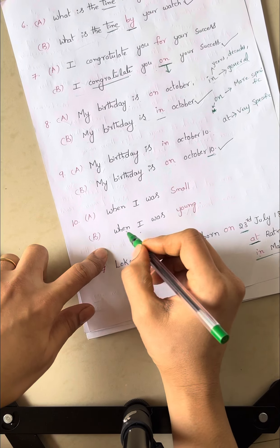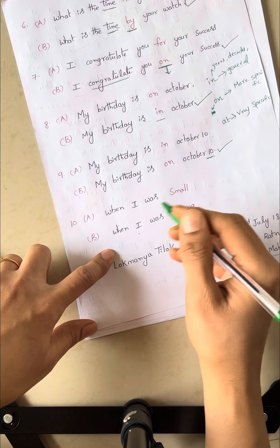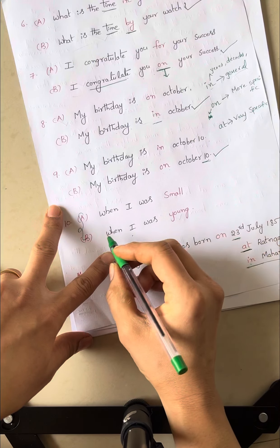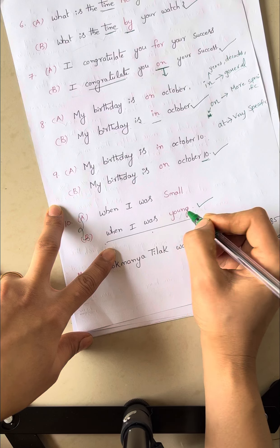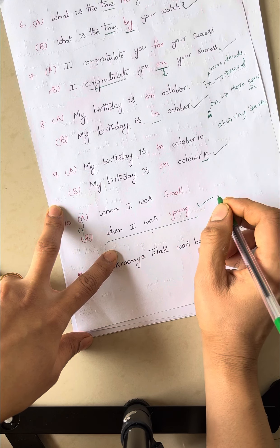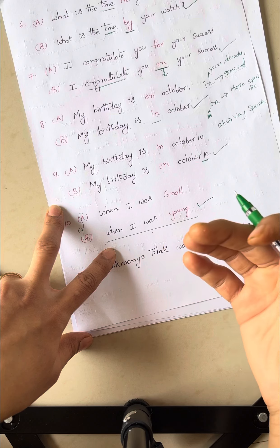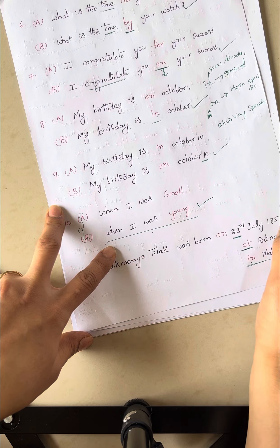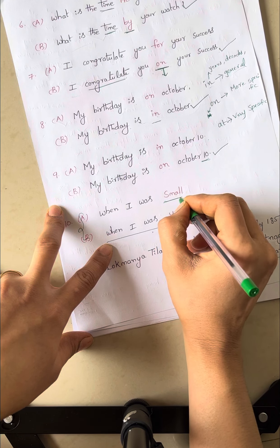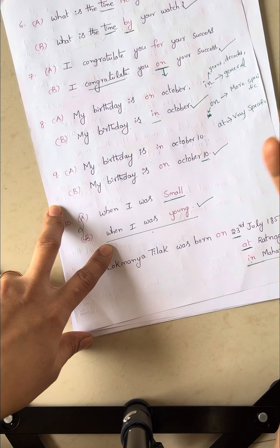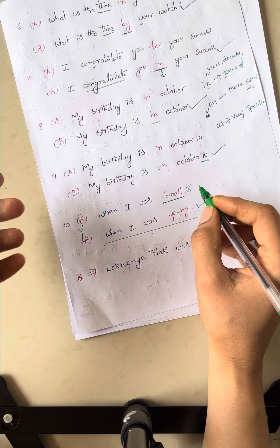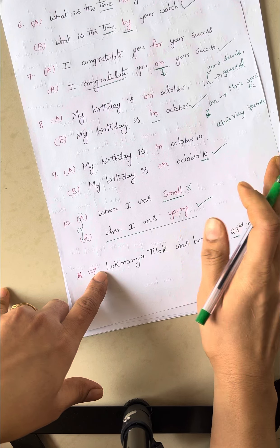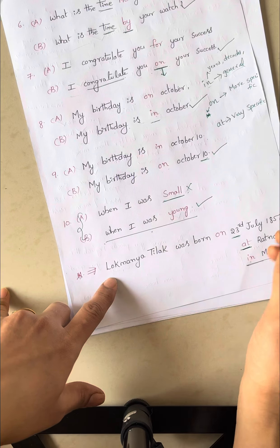When I was small. When I was young. Which one is correct? Grammatically both are correct. But as per language point of view, you can use when I was young. Small means we talk about the size of something. So don't use it in this context as per language point of view. Grammatically correct, but language-wise, don't use it.